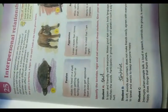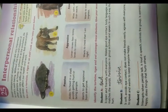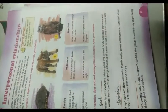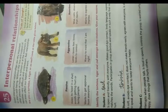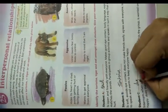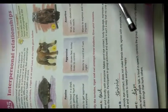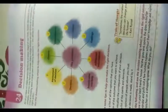Student C interrupts when people talk, is loud in speech, controls the group, is worried only about being happy, and does things that hurt others — Student C is a tiger. So students, we have completed Chapter 24 and Chapter 25, and this work you have to do in your textbook only. Thank you.